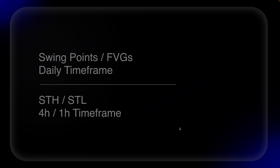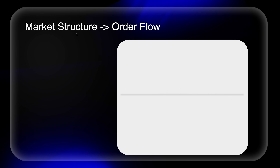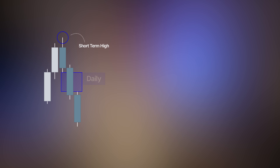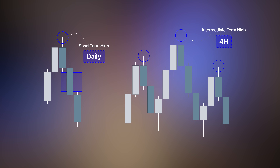Market structure now leads to the understanding of order flow. We understand intermediate highs, intermediate lows, short-term lows, and short-term highs — but a short-term high on one time frame is an intermediate term high on another, and a short-term low on one time frame is an intermediate term low on another. So a short-term high on the daily is most likely an intermediate high on the four-hour. It is all fractal — we are working towards a fractal understanding of the market.